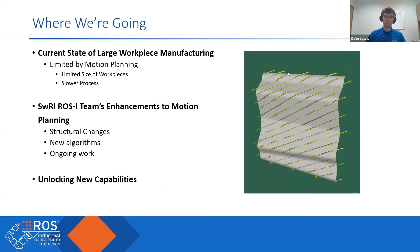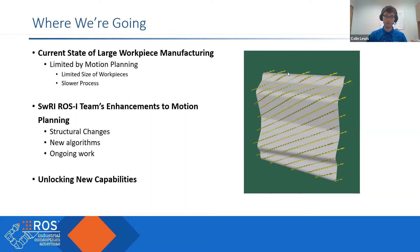Our previous implementation of Descartes had some intrinsic limitations that prevented it from being fully useful on very large applications. If we have a robot on a rail or mobile robots, large workspaces were limited. Having identified that shortcoming, we have begun a process of replacing large swaths of it to hopefully unlock some new capabilities moving into this large workspace domain.